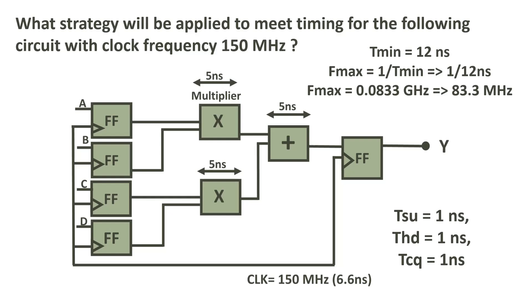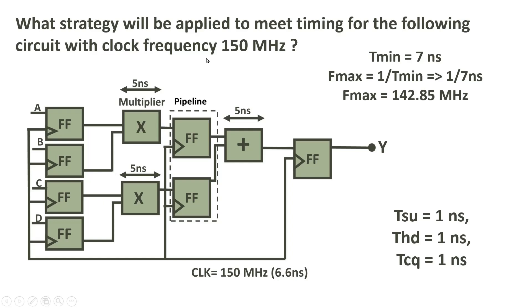Now let us discuss some of the most commonly given answers and solutions. So this is one of the most commonly given solution. Many of the viewers suggested that we should use a pipeline between the multiplier and this summation logic. So we have to put two flops, one between this multiplier and summation, another one between these two.